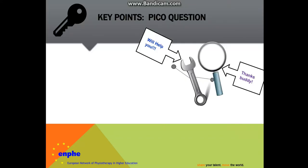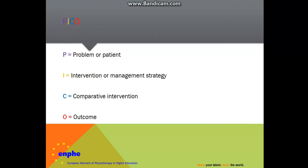In summary, what is a PICO question? It's a tool that facilitates the search for an answer, as the picture may help you to remember. It's an important part of a well-built clinical question. It's also used to identify the key concepts that need to be in an article, and it's used for both quantitative and qualitative studies.